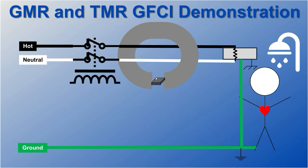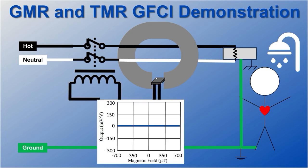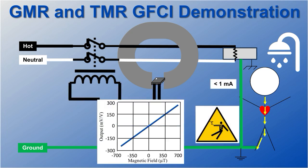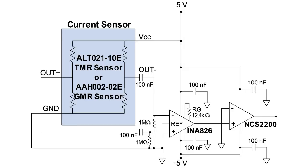In this demo we're using NVE's GMR and TMR magnetometers with a split core flux guide to detect leakage current below 1 milliamp. Here's a circuit we've used to detect zero crossings which we'll display on the PC.